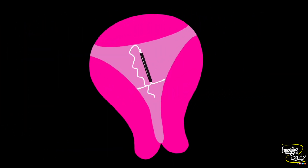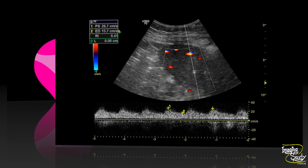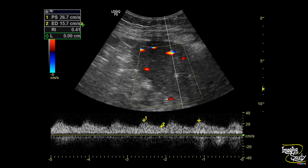I am trying to demonstrate the position of the intrauterine contraceptive device in this diagram. It got malrotated or twisted during insertion, so the appearance came like this. Usually when we see the intrauterine contraceptive device at the level of the body, we note it as a normal device in situ — but we definitely should check the location of the horizontal part.